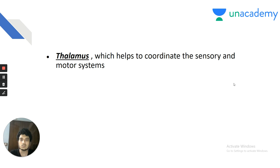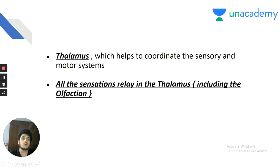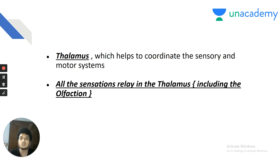The thalamus coordinates sensory and motor systems. All sensations of the body are relayed in the thalamus including olfaction. This is an updated concept — previously textbooks said all sensations except olfaction relay in thalamus, but Guyton and Ganong have updated this to include olfaction as well.